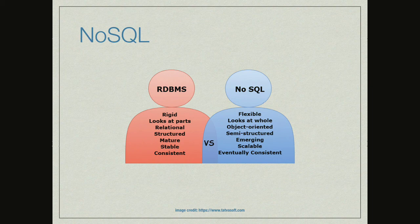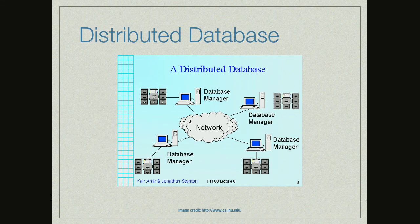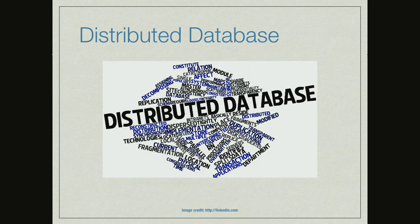With that in mind, we started looking at the next step: the distributed database — or as I like to call it, the database of the future. A distributed database is a database in which storage devices are not all attached to a common processor. It may be stored in multiple computers in the same physical location, or dispersed over a network of interconnected computers. Unlike parallel systems — your standard relational database — where processors are tightly coupled, a distributed database consists of loosely coupled sites that share no physical components. That sounds a little bit like containers, right?